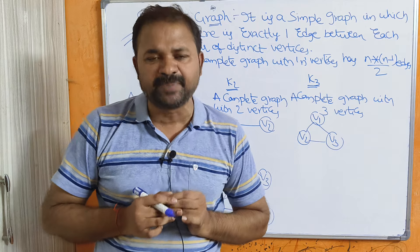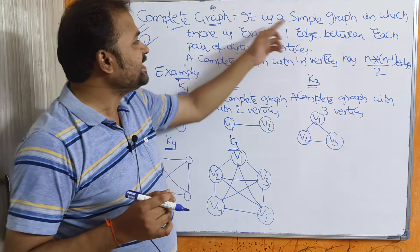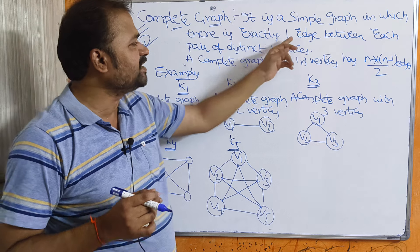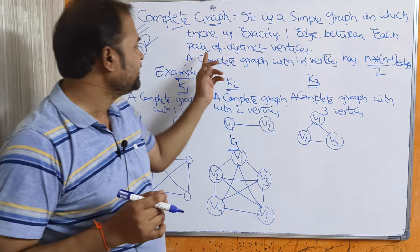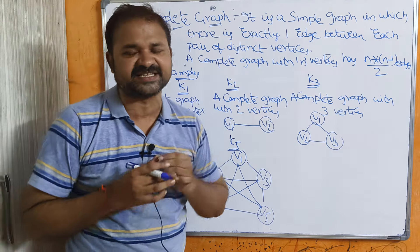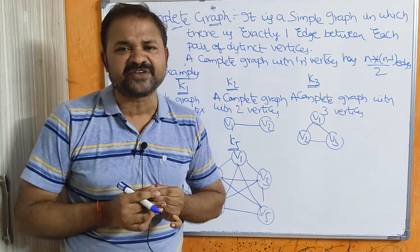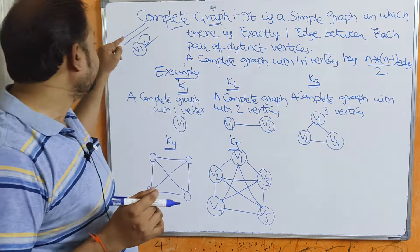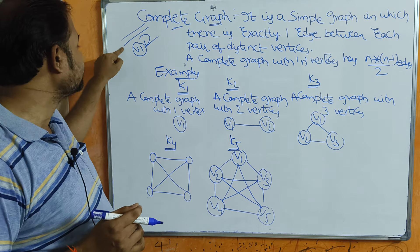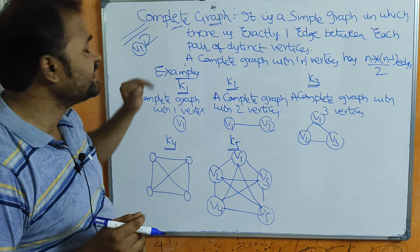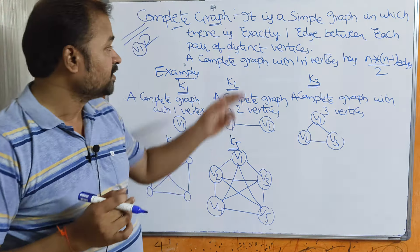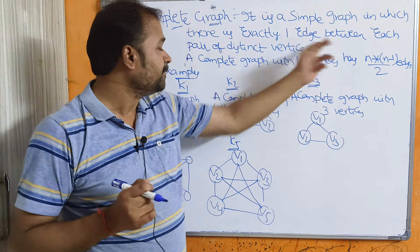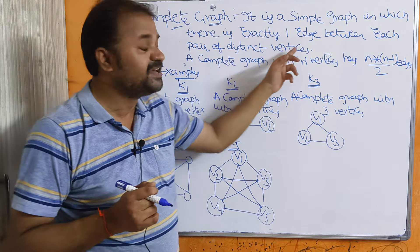Now let us discuss about complete graph. It is a simple graph in which there is exactly one edge between each pair of distinct vertices. A complete graph does not contain any parallel edges or self loops, and we should have exactly one edge between each pair of different vertices.